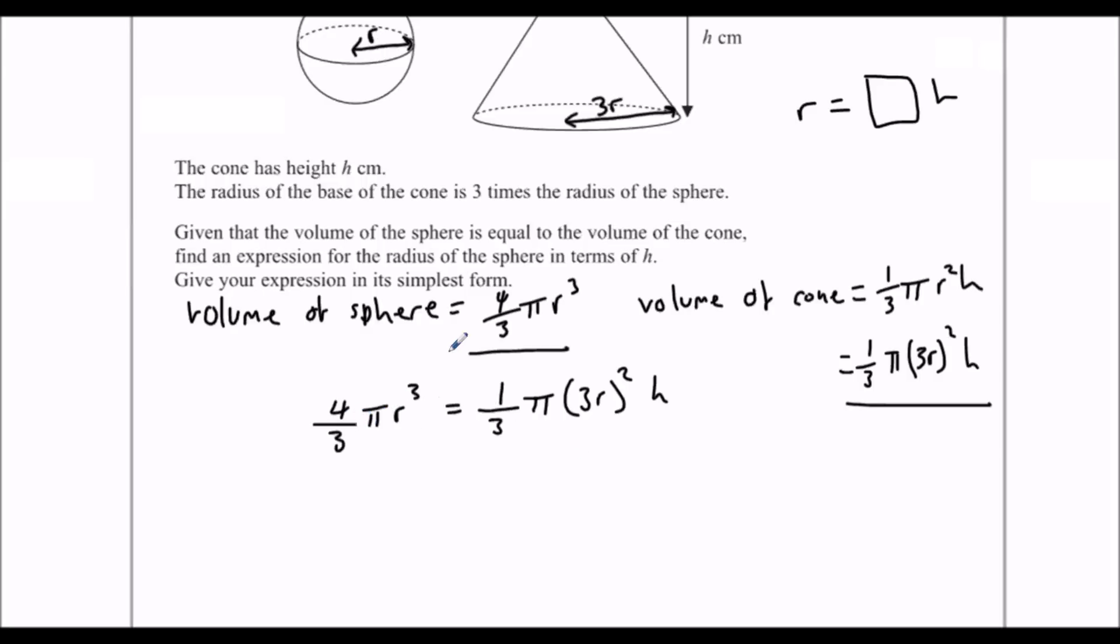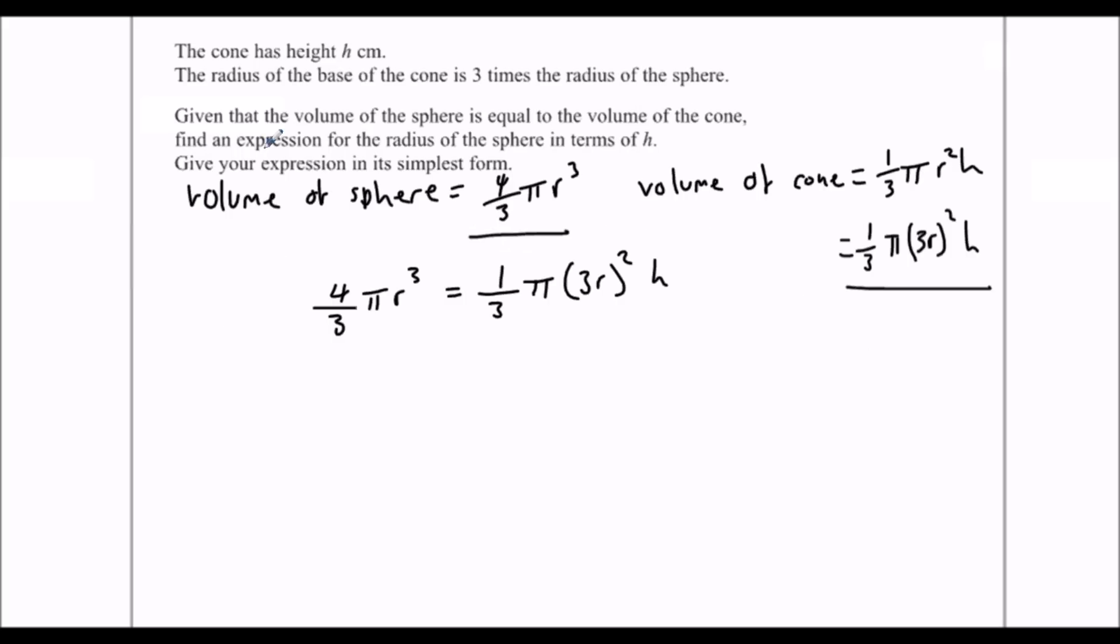If I multiply both sides by 3, I can get rid of these thirds at the front. So I have 4π r cubed equals π times 3r all squared times h. I can divide both sides by π, so that will just disappear.